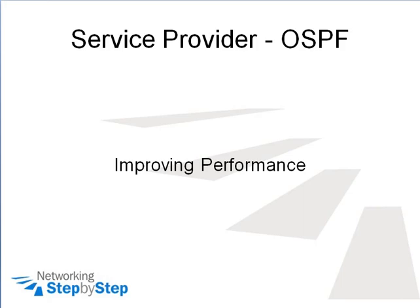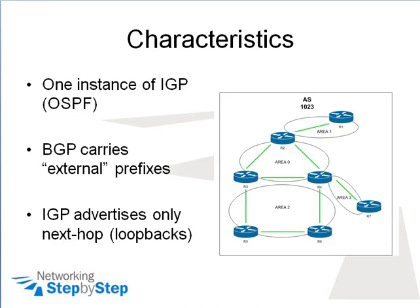What can a service provider do to improve the performance of OSPF? Traditionally, service providers run one IGP — in this video podcast, it is OSPF. They also utilize only one instance of OSPF, and they also run BGP. BGP is basically carrying the customer routes or external routes, and the purpose of OSPF is to carry the route for the next hop to those customer routes.